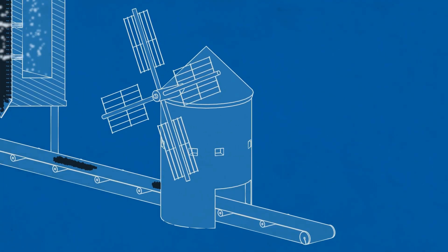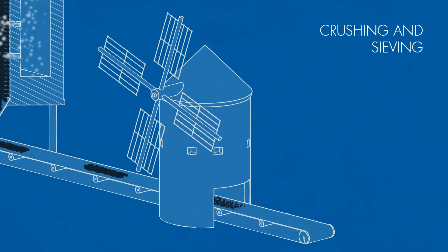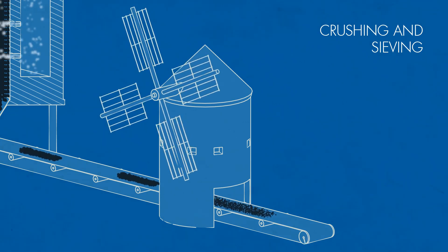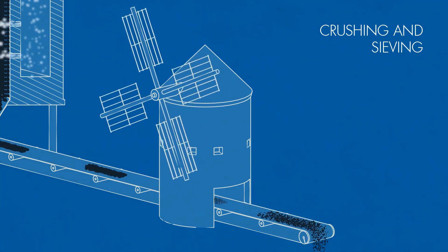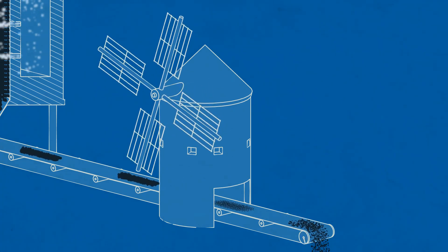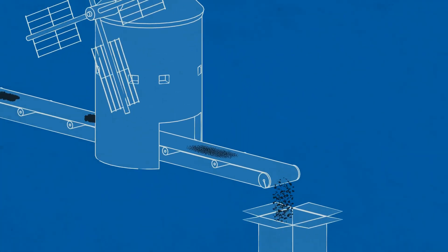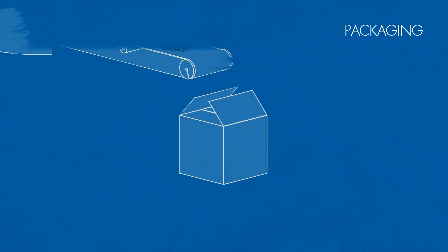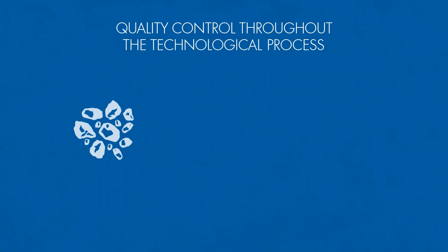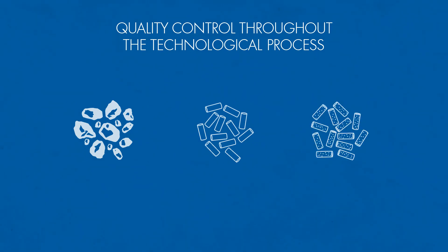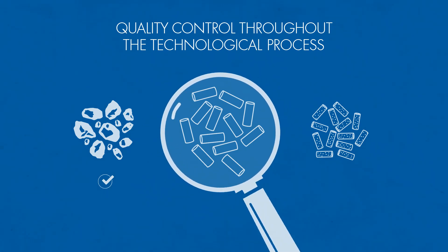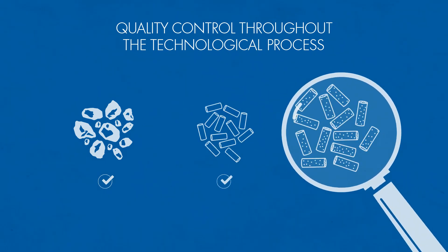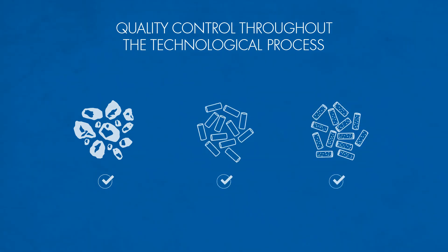The final stages are crushing and sieving of the active semi-finished product with the release of particles in the production of granulocarbons, or grinding of the semi-finished product in the production of powder carbons. The production process is completed by the packaging of the finished product. It should be noted that the laboratories of the company perform quality control of raw materials, semi-finished and finished products throughout the technological process.